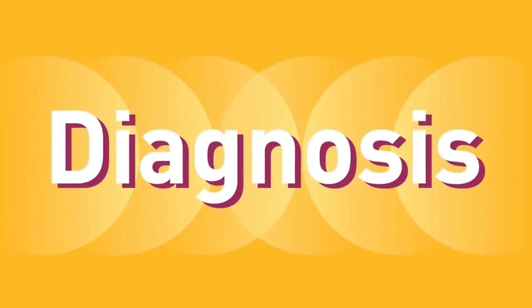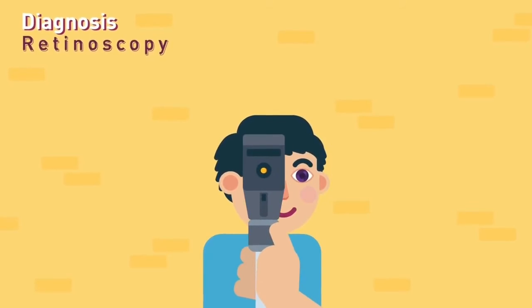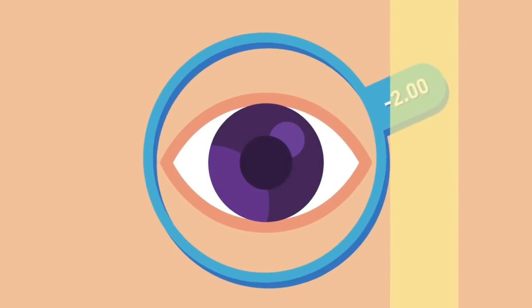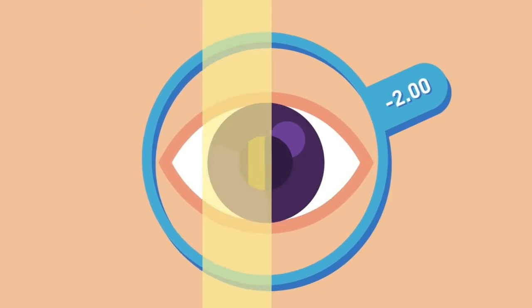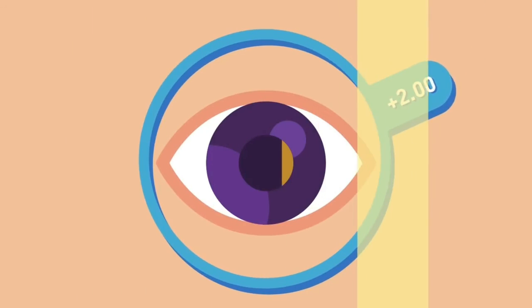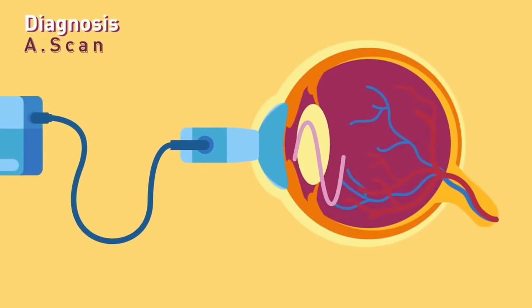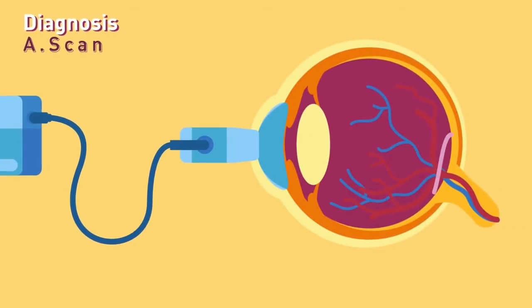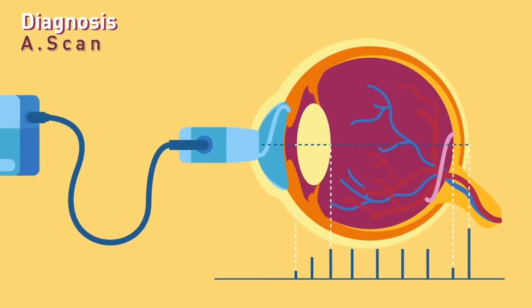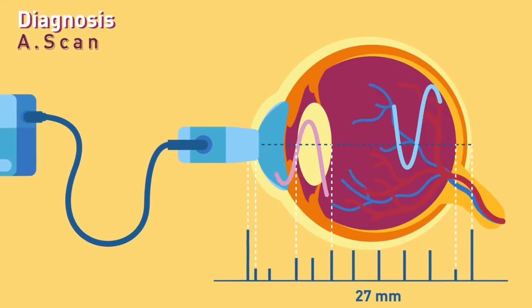Diagnosis. Retinoscopy: a handheld device that throws light into the eye, allowing us to observe its movements and reflection, hence helping to confirm the refractive error. A-scan: a small ultrasound probe that throws ultrasound waves into the eyeball and then detects their reflections or echo timings, calculating the eyeball length.